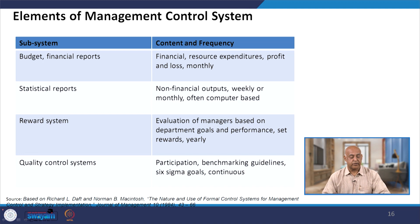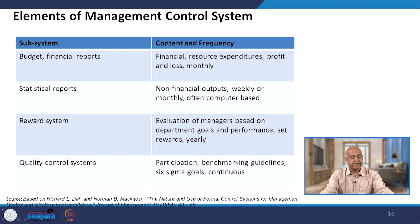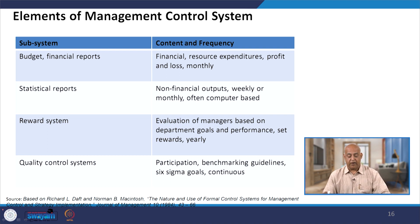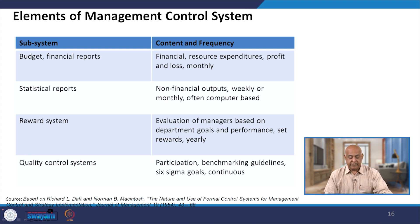Based on these four control systems, subsystems and their content and frequency have been developed. Budget/financial reports cover financial resources, expenditure, and profit and loss on a monthly basis. Statistical reports address non-financial outputs weekly or monthly, often computer-based. Reward systems involve evaluation of managers based on departmental goals and performance, with rewards given yearly.